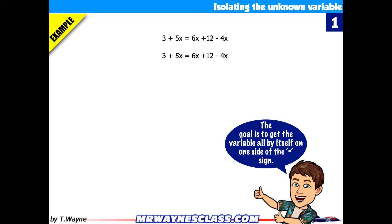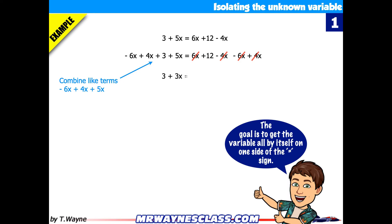I'm going to do the same thing to both sides. So negative 6x plus 4x — and you can see on the left side something nice happens. The 6x go away, and the 4x are going to go away on the right-hand side. On the left-hand side, I've got to combine my like terms — everything with an x in it. That gives me the new expression: 3 plus 3x is equal to 12.